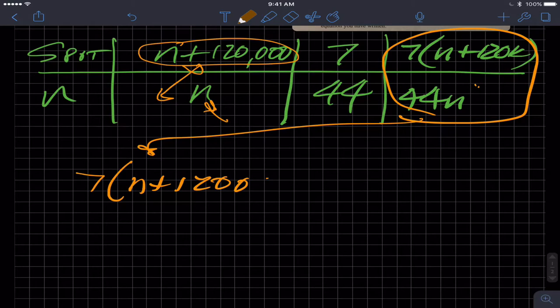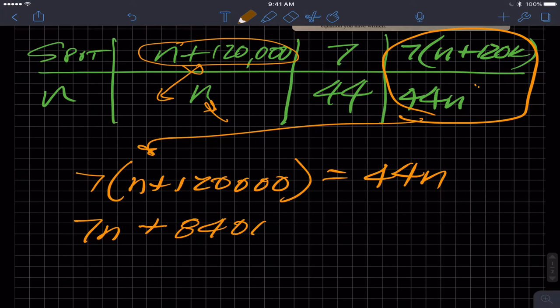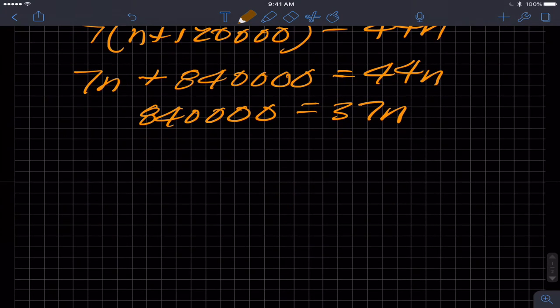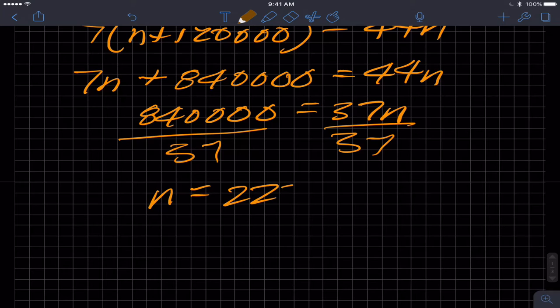We have this equation: 7(n plus 120,000) equals 44n. Then we just do a little algebra. Seven times n plus 120k is 7n plus 840,000 equals 44n. Then 840,000 equals 37n. And then divide both sides by 37, and we get n, the average rate at which Napster acquired users as 22,703.